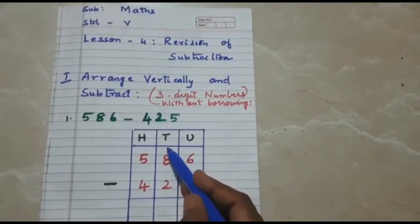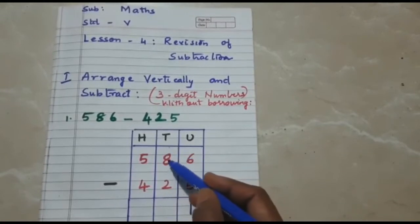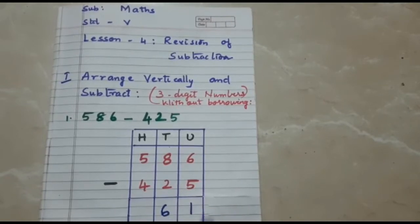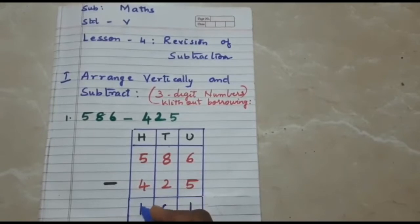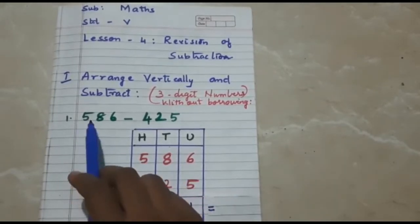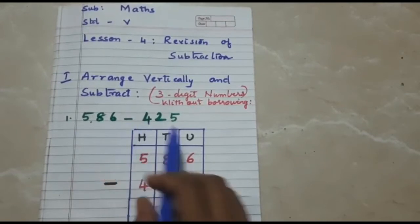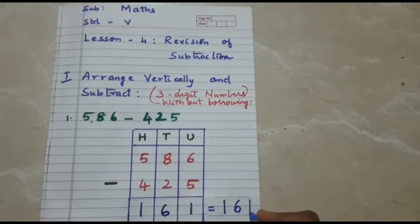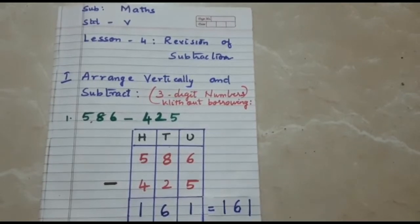Next, in the tens place, 8 minus 2 is 6. And in the hundreds place, 5 minus 4 is 1. So our difference of 586 minus 425 is 161.